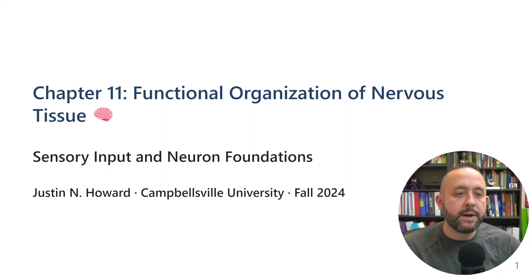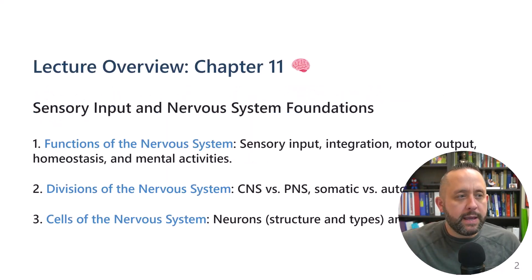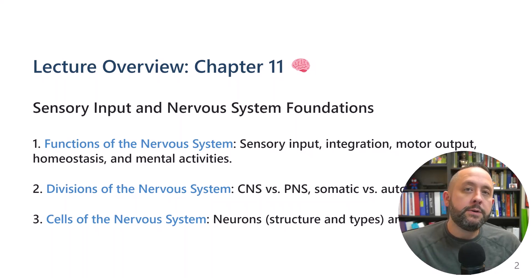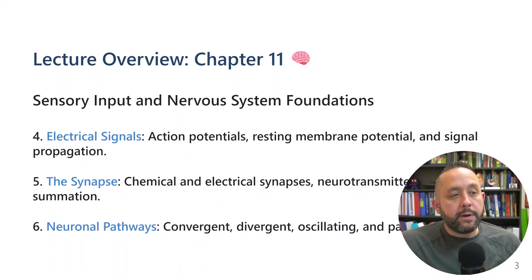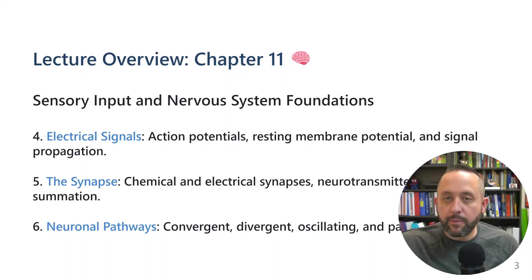It's a lot of information, but you're going to be surprised about how much you already know. We are going to talk about the functions of the nervous system, how it's divided up anatomically and functionally, review some cell types, add to our knowledge of the neuron, action potentials, resting membrane potentials, the synapse, and learn something new about neuronal pathways. It should take about 15 to 20 minutes.